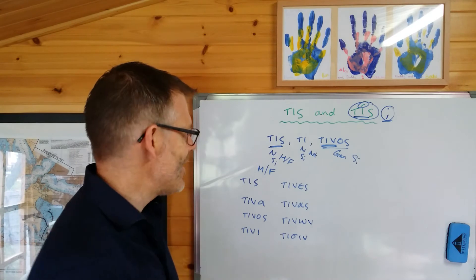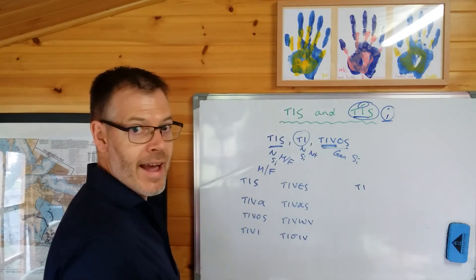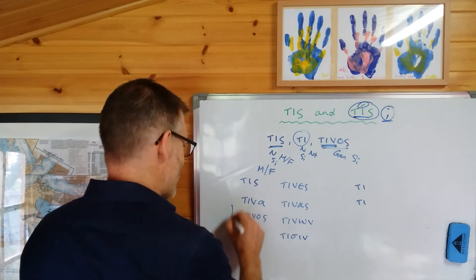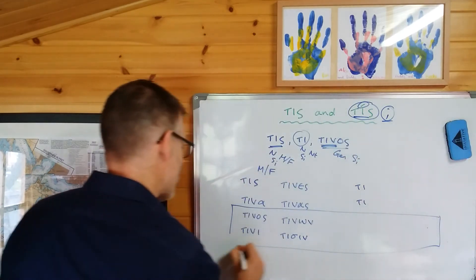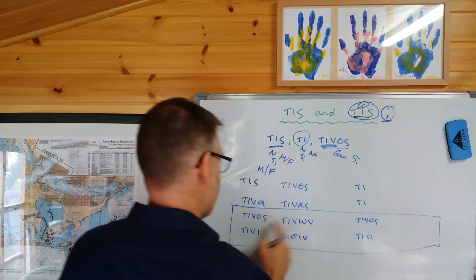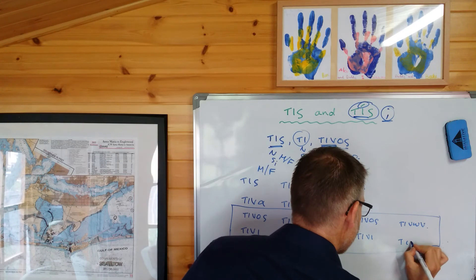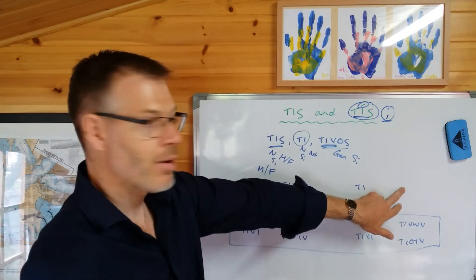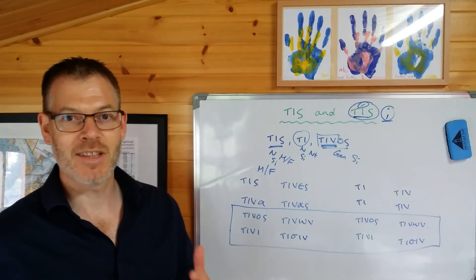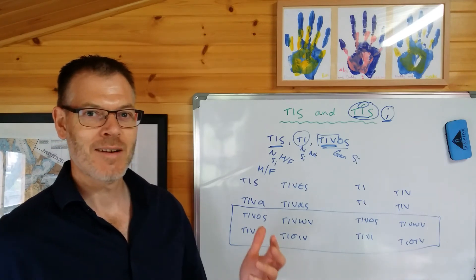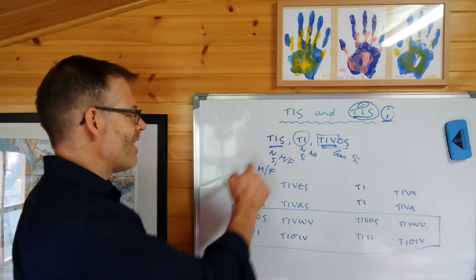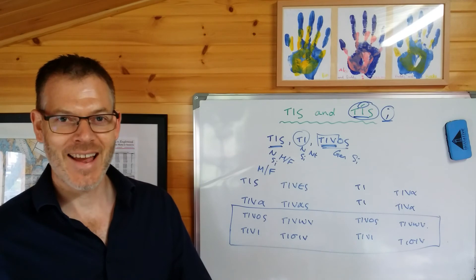The neuter form is very, very easy as well. We begin with ti, and then we generate the rest of the declension from it: ti, ti — because in the neuter, nominative and accusative are always the same. For the rest of the declension, we simply follow the pattern from the masculine/feminine: tinos, tini, tinōn, tisin. That only leaves the neuter plural nominative and accusative. We get the stem tin, and then think what ending it's going to be — the same ending we're used to in other neuter plural nominative and accusative nouns — tina, tina. And there you are, that's the full declension for tis, ti, tinos — the interrogative and indefinite pronoun.